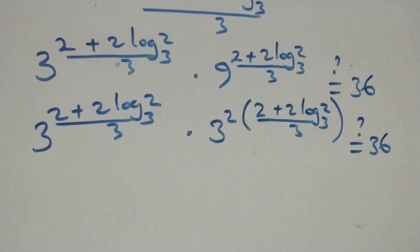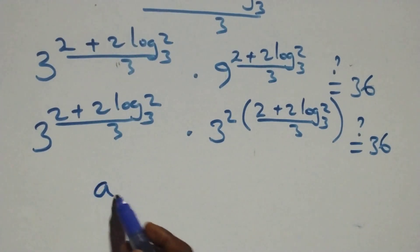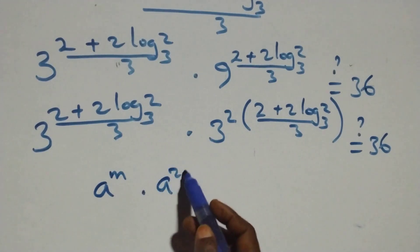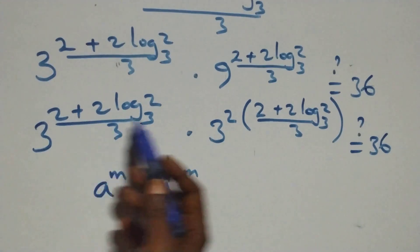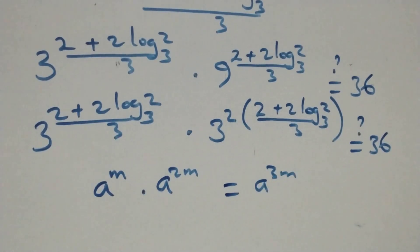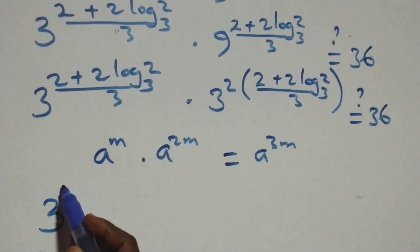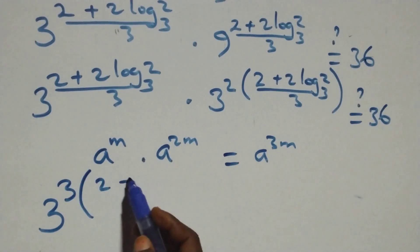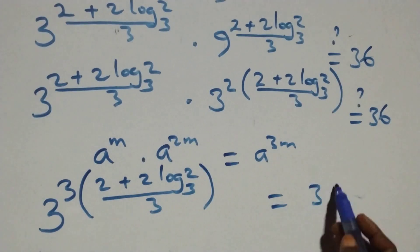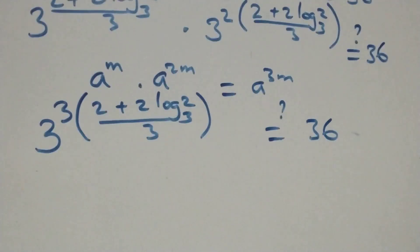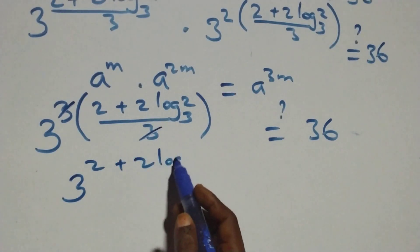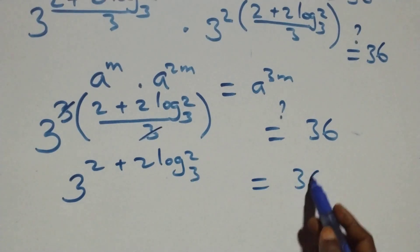This follows when we have a raised to power m times a raised to power 2m — that equals a raised to power 3m. So we can write 3 raised to power 3 times (2 plus 2·log₂ base 3) over 3, which simplifies to 3 raised to power (2 plus 2·log₂ base 3). This equals 36.